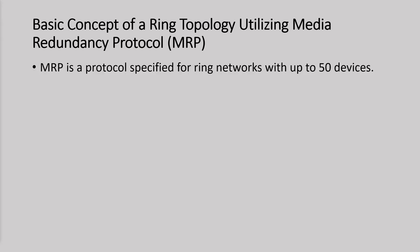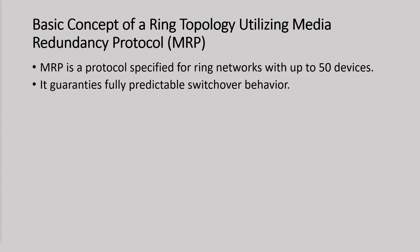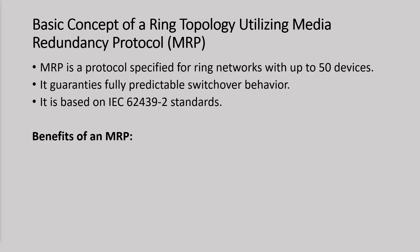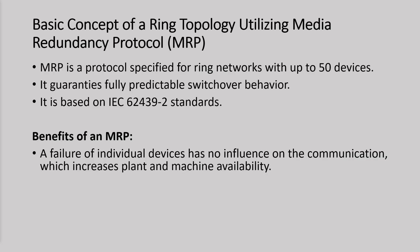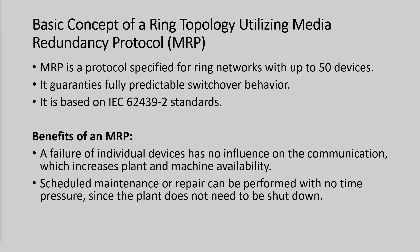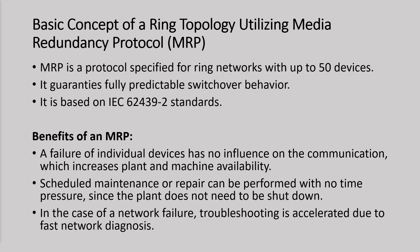The media redundancy protocol is specified for ring networks with up to 50 devices. It guarantees fully predictable switchover behavior, and importantly it is based on the IEC 62439-2 standard, which makes it manufacturer-independent. Some of the benefits of MRP are that a failure of an individual device has no influence on communication, which increases plant and machine availability. Also, scheduled maintenance or repair can be performed with no time pressure since the plant does not need to be shut down, and in the case of network failure, troubleshooting is accelerated due to fast network diagnosis.